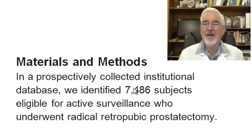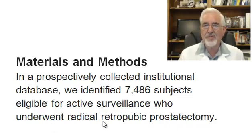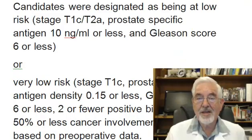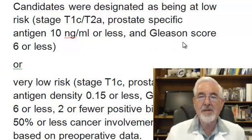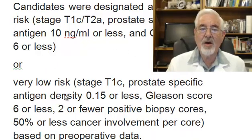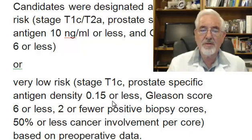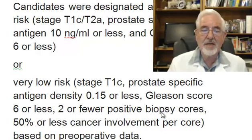In this study, they prospectively collected 7,486 patients subject for active surveillance who underwent radical retropubic prostatectomy. Candidates were divided into two groups. The first group were stage T1C or T2A with PSA of 10 nanograms or less and Gleason score of 6 or less, two or fewer positive biopsy cores, and 50% or less cancer involved per core.